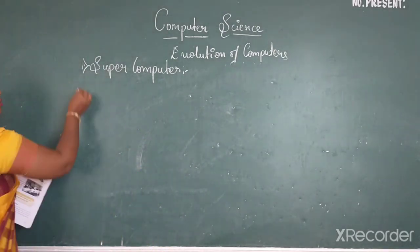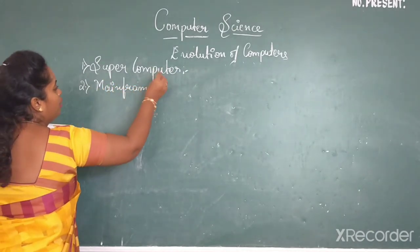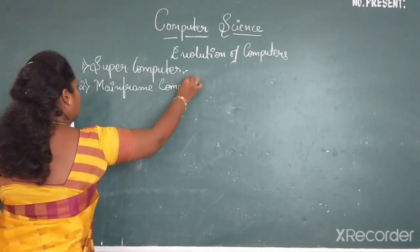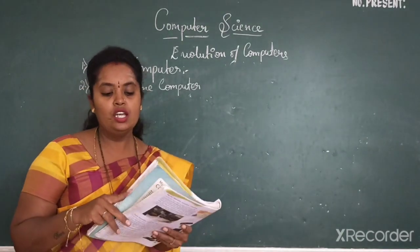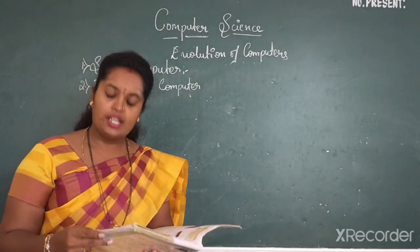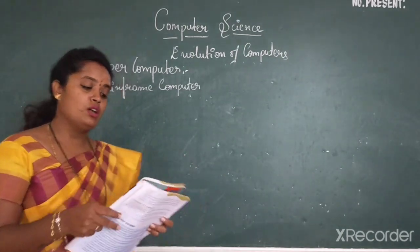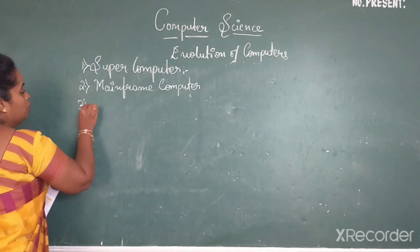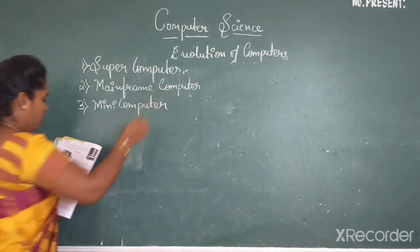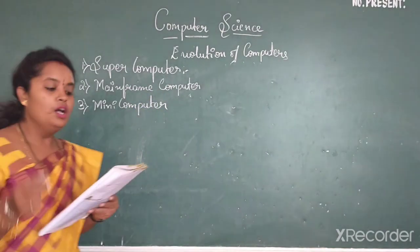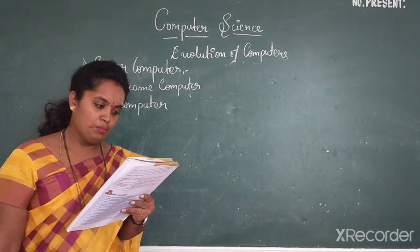Next comes your mainframe computer. Mainframe computers are less powerful and less expensive than the supercomputers. They are used in big organizations such as banks, large-scale undertakings, etc. Then comes your mini-computer. This is a general-purpose computer where a large number of people can work together. PDP-8 and Mac are the examples.